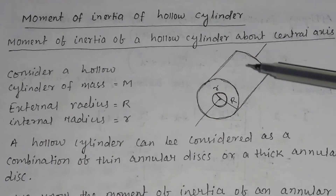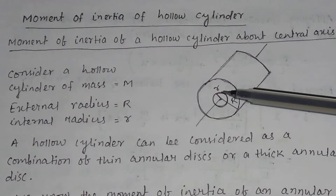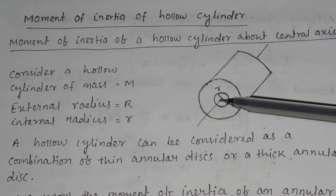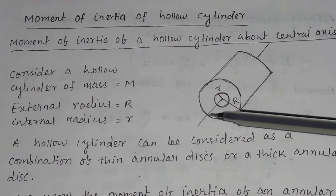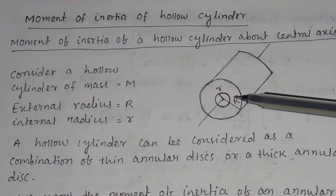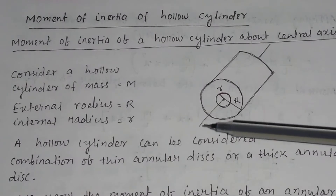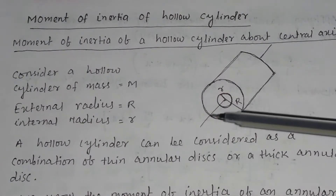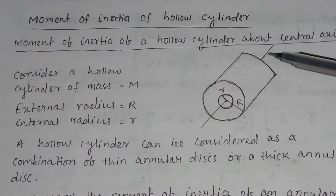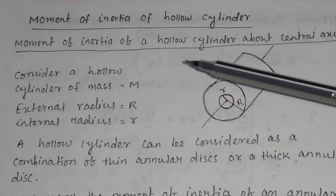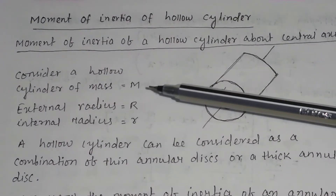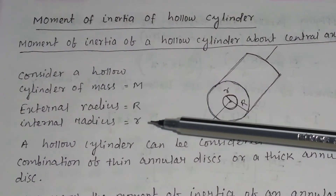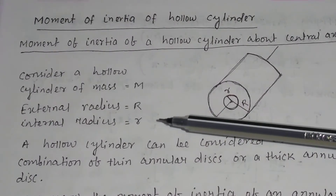This is a hollow cylinder. The internal radius of the cylinder is small r and the external radius of the cylinder is capital R. This is the central axis of this hollow cylinder. The mass of the hollow cylinder is m, external radius capital R, internal radius small r.